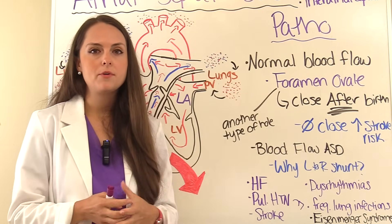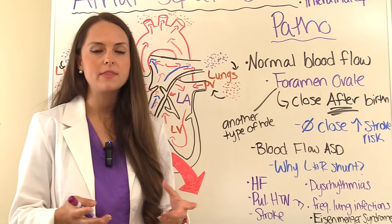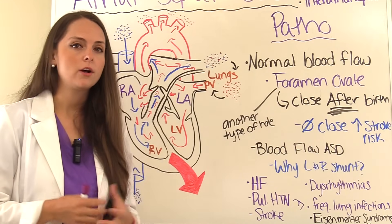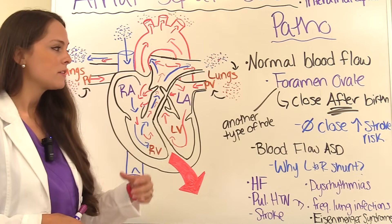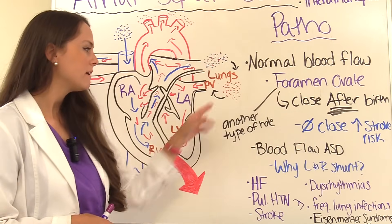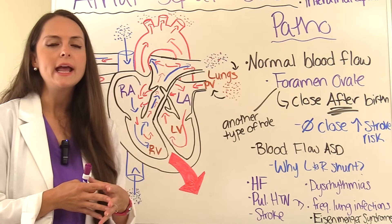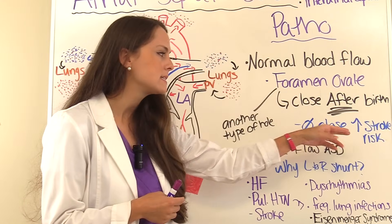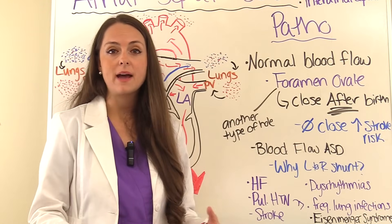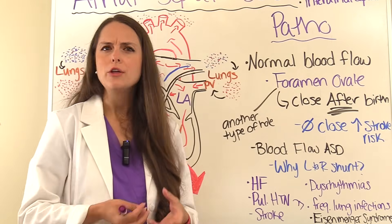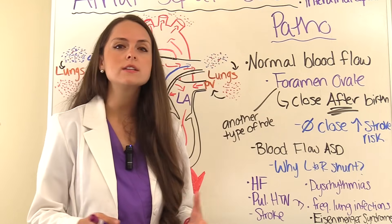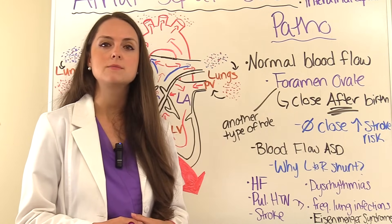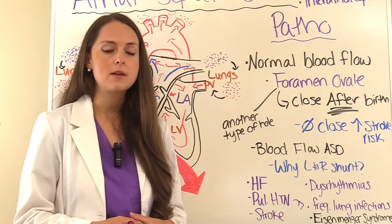In some people this doesn't occur, and many don't even know it because they don't really have signs and symptoms. They have what's called a patent foramen ovale — a PFO. The problem with a PFO is that it can increase the risk of stroke. A patient can be admitted having had a stroke, and upon doing an echocardiogram they discover the patient has a patent foramen ovale that was the source of the stroke.